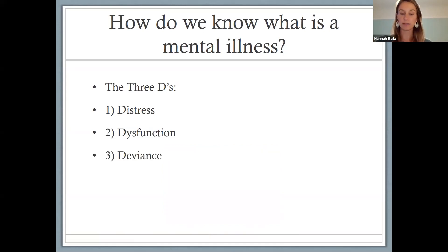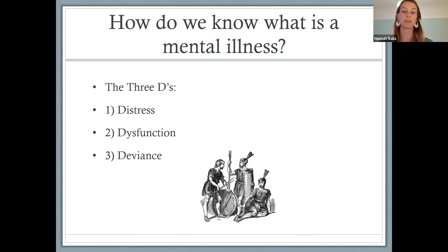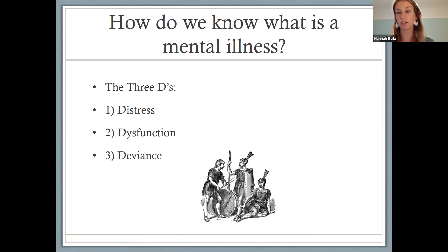The third D is deviance, which refers to behavior that is deviant from the norm for our specific culture. As an example, back in Roman times, the Romans would build lavish dining tables with couches, have long dinner parties, eat so much food that they would have to go outside and make themselves vomit in order to keep eating. Nowadays we might call that binge eating disorder or bulimia, but at the time, because it was culturally normative, it wasn't deviant and we would not label it as a mental illness.